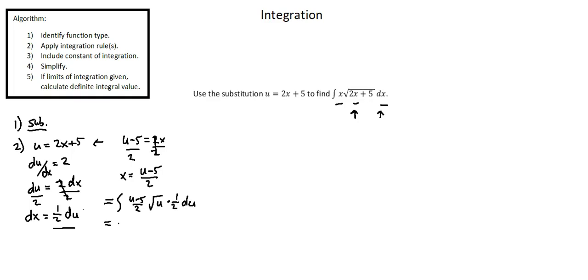I'll perform some simplification. I have u minus 5 divided by 2 just before the du term, times 1 half. So we are dividing everything by 4, or multiplying by 1 over 4. We get 1 over 4 times the integral of u minus 5 times u to the power of 1 half with respect to u.